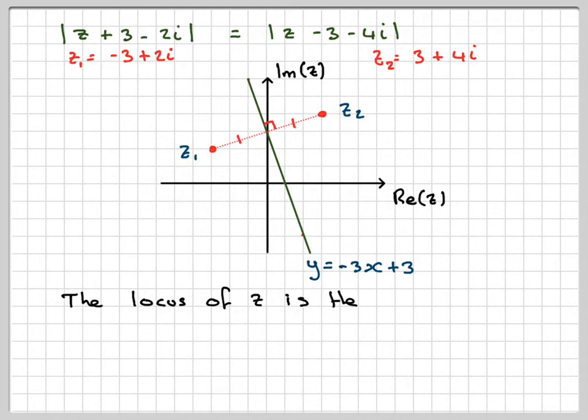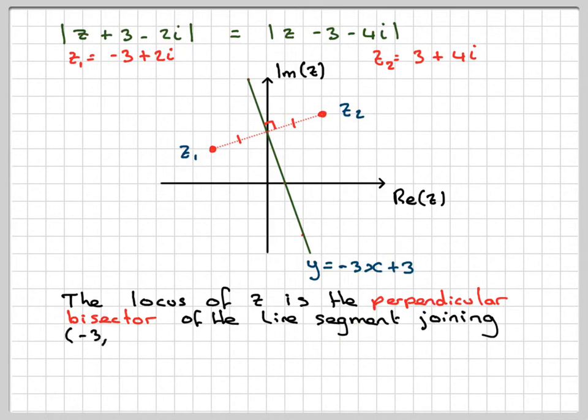And therefore the locus of z is perpendicular to the line segment joining minus 3, 2 and 3, 4.